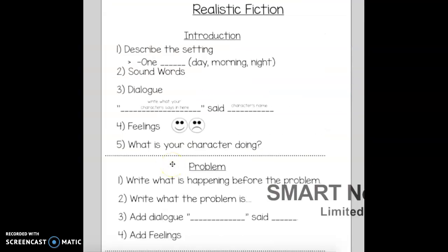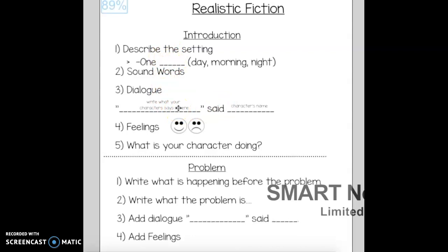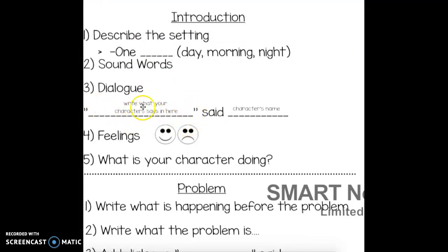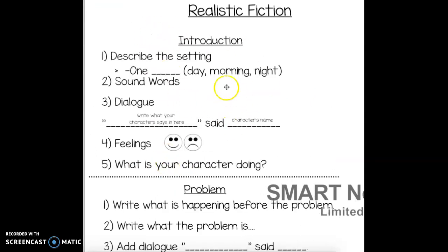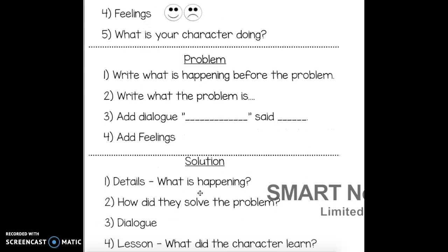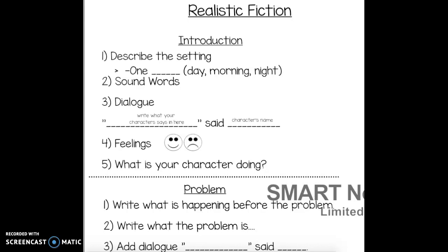So now what you're going to do — you could either write another realistic fiction story making sure you have all of these elements, or go back to your old one, reread it, and make sure you have a setting in the beginning, dialogue, feelings, and what your character is doing. If you don't know how to write dialogue, remember: two quotation marks with what your character says, then 'said' and who said it — for example, 'Hi, said Miss Palazzo.' Make sure you have a beginning, middle, and end. When you're done, draw a picture and post it on ClassDojo. Use this chart to help you. Go write!